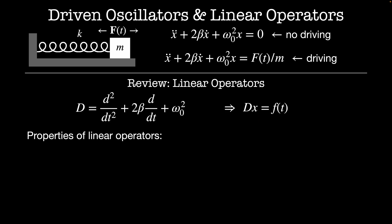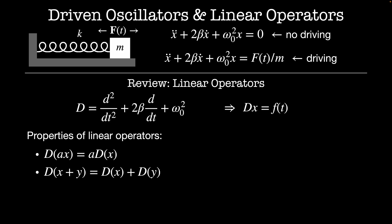Linear operators have some really nice properties, and they're going to show up all over the place in so many different physics problems, both in this class and in other classes. The first property is D acting on a scalar a times x equals a times D acting on x. The next is D acting on two functions x plus y is equal to D acting on x plus D acting on y. These two properties together define an operator as being linear.